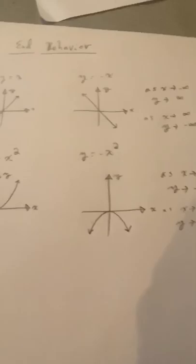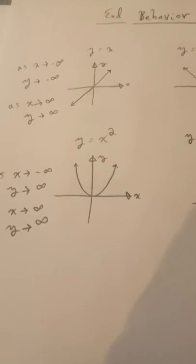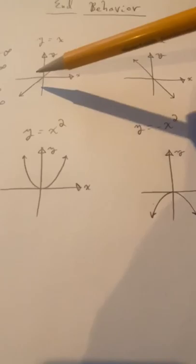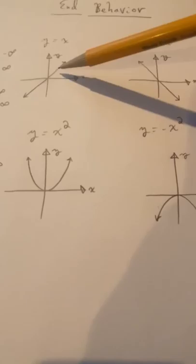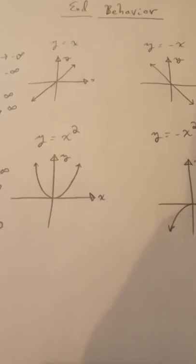Any polynomial, no matter how many terms it has or whatever degree it has, its end behavior is determined by the sign of the leading coefficient and the degree. End behavior always falls into one of these four categories. What happens in between is different — higher degree functions can have more movement in between — but the behavior at the theoretical endpoints approaching negative and positive infinity is determined exclusively by the sign of the leading coefficient and the degree.